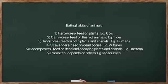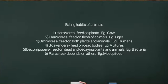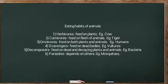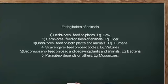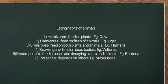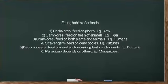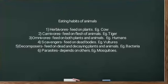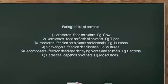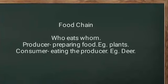On the basis of eating habits, animals are divided into six types. Herbivorous means they feed on plants — example, cow. Carnivorous means they feed on flesh — example, tiger. Omnivorous means they feed on both plants and animals — example, humans. Scavengers feed on dead bodies — example, vultures. Decomposers feed on decaying plants and animals — example, bacteria. Parasites depend upon other living animals for food.